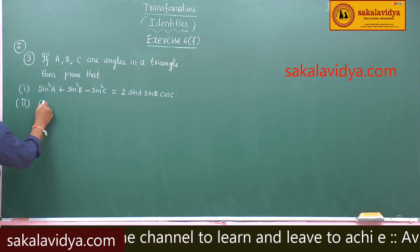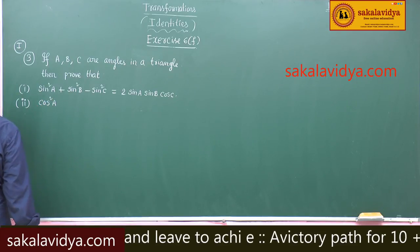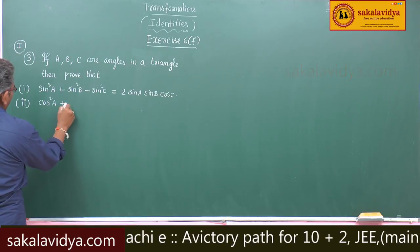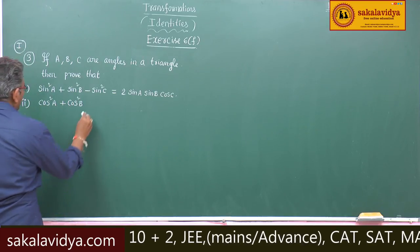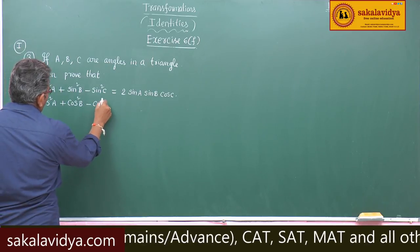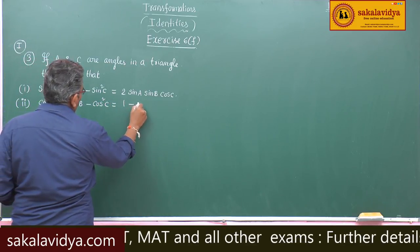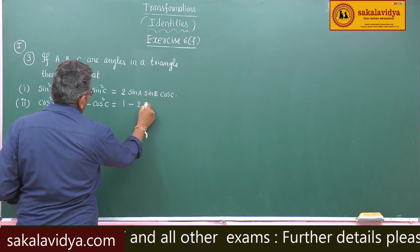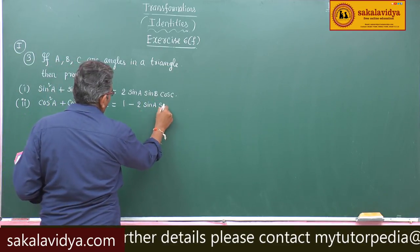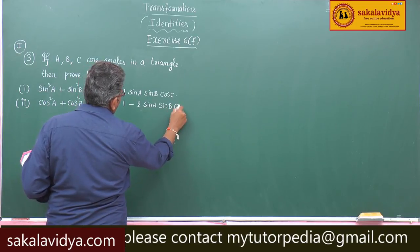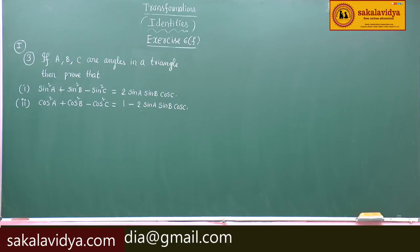Second problem: cos²a plus cos²b minus cos²c is equal to 1 minus 2 sin a sin b cos c. Let us prove it.